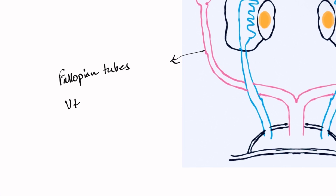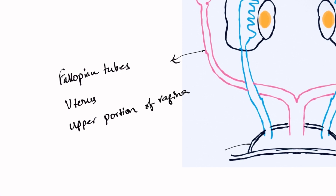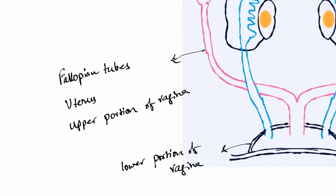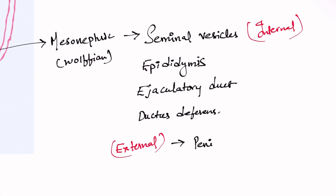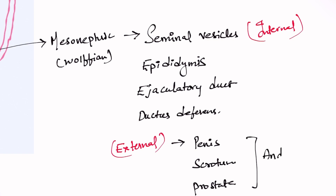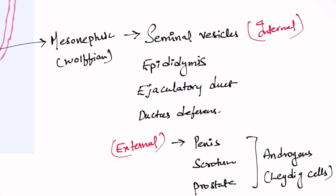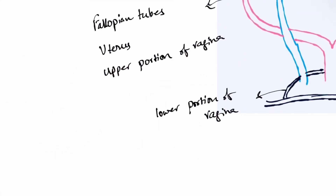Coming to females, the paramesonephric duct develops into the fallopian tube, uterus, and upper portion of the vagina. The urogenital sinus develops into the lower portion of the vagina. That is how the mesonephric and paramesonephric ducts develop into genital structures. As for external structures — like the penis, scrotum, and prostate — these are developed from androgens, that is testosterone, which are secreted by Leydig cells.